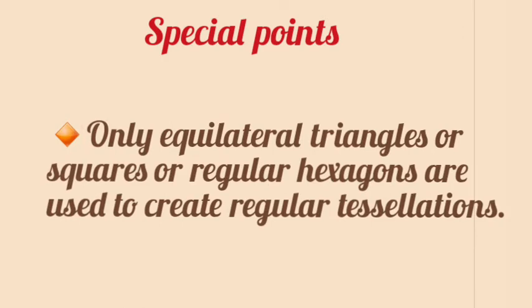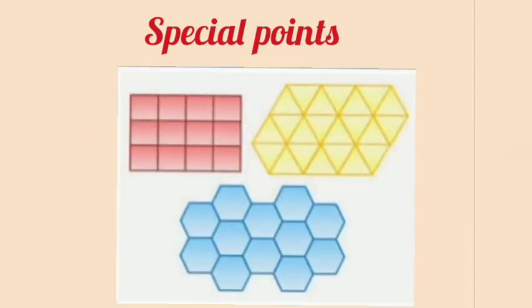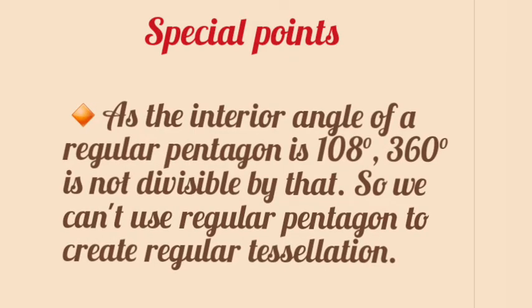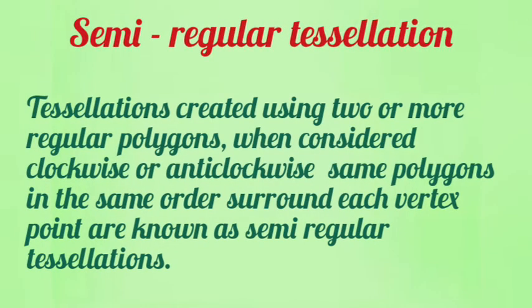Only equilateral triangles, squares, or regular hexagons are used to create regular tessellations. These are some examples of regular tessellations created using squares, equilateral triangles, and regular hexagons. As the interior angle of a regular pentagon is 108 degrees, 360 degrees is not divisible by that, so we cannot use a regular pentagon to create a regular tessellation.